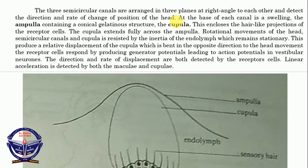The semicircular canals detect the direction and rate of change of direction of the head. The otoliths sense lateral and vertical movement of the head at basic or slow level, while the semicircular canals and the ampulla sense it at a more dynamic level. At the base of each canal is a swelling called the ampulla, on the structure of the membranous labyrinth.